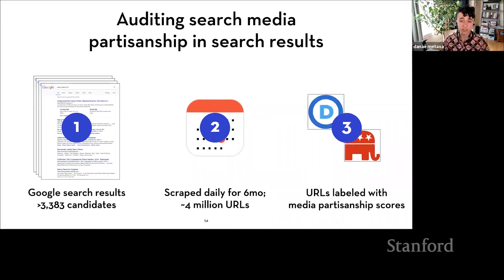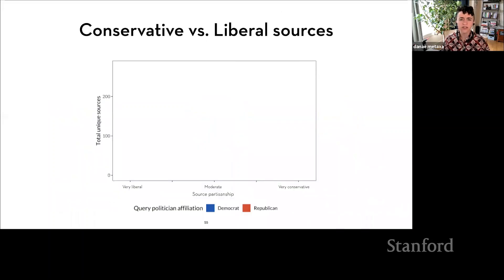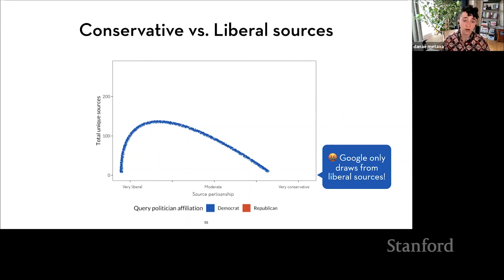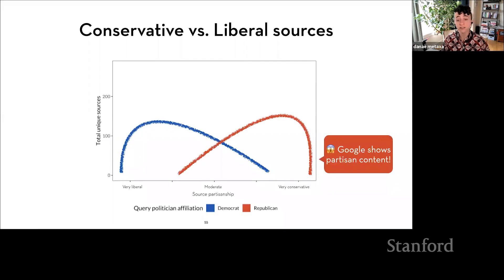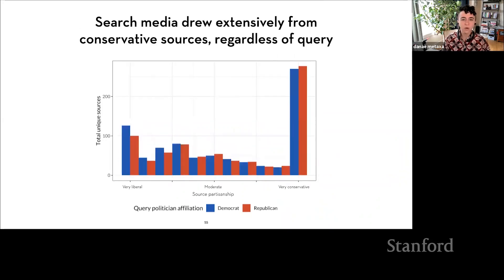I repeated that data collection every day for the six months leading up to the election, for a total of over 4 million URLs. I used an established metric to label each URL with a partisanship score — from very liberal to very conservative — describing the ratio of liberals to conservatives who normally engage with that website. What we found is that search media drew extensively from conservative sources regardless of query, and this pattern looked roughly the same regardless of the affiliation of the candidate being searched for. At least by these metrics, there isn't some widespread bias against conservative content in search media — algorithm auditing can also identify when there isn't evidence in support of some alleged bias.